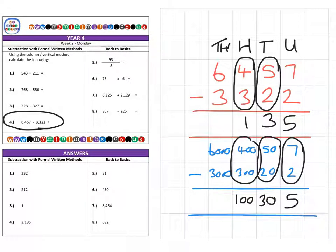And finally into the thousands column: 6,000 minus 3,000 gives us 3,000, for a final answer of 3,135.